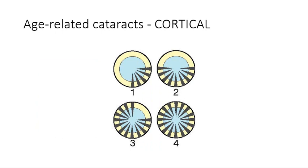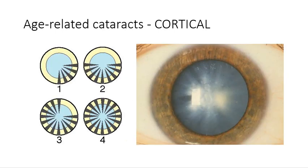Cortical cataracts can also be classified according to their severity, depending on how severe the spoke appearance is as you're viewing it from the front. This schematic diagram shows the right eye, and classification 1 relates to the start of a cataract in the inferior nasal section of the lens. It eventually spreads to the whole inferior part and so on until the whole lens is occupied, which is then assigned a grade 4 classification. Here's a good example of a grade 4 cortical cataract — you can see the spokes radiating outwards occupying the entire lens.